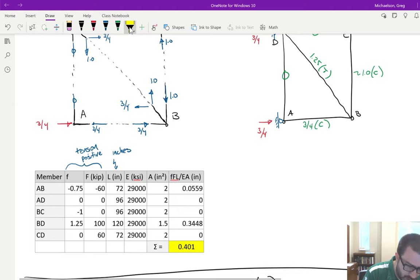We had listed the length in inches, and then the E and the A value accordingly. Just so you are aware, like for instance, this 0.0559, I want to make sure you know where that comes from. I'm doing little f, big F, times L, divided by E, divided by A.